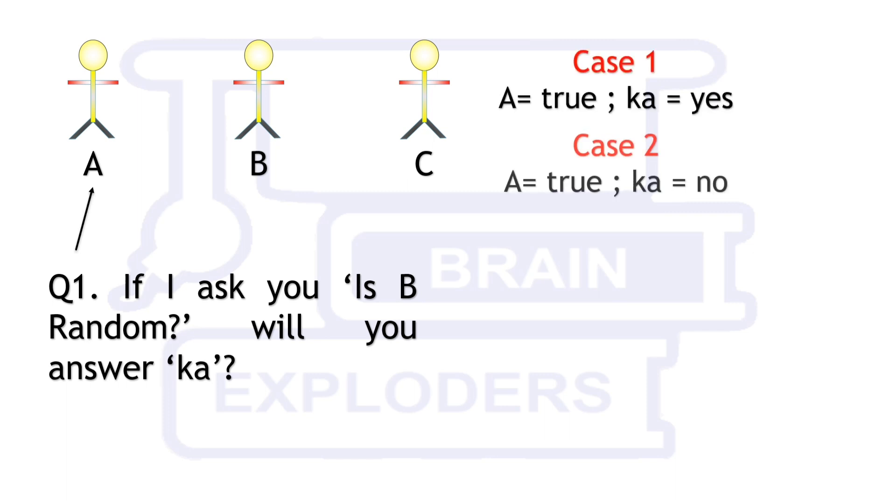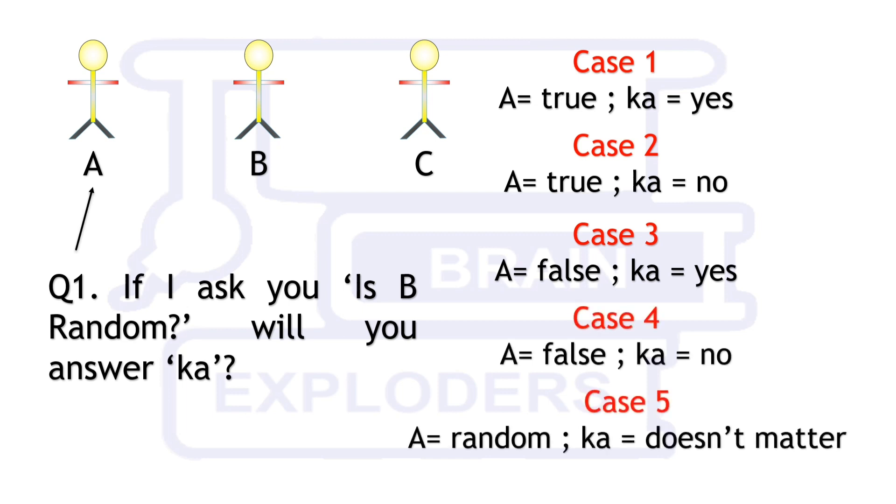A is true and Ka means yes. A is true and Ka means no. A is false and Ka means yes. A is false and Ka means no. A is random and doesn't matter what Ka means.